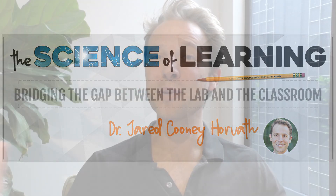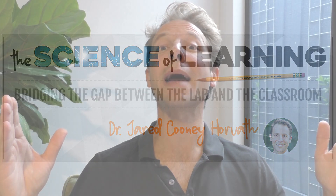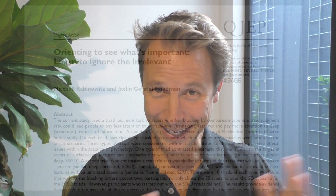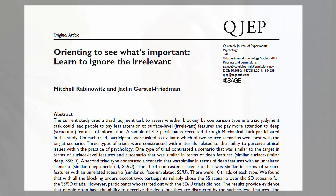Hello everybody and welcome to this week's From the Laboratory to the Classroom, where I read the research so you don't have to. This week the article I've chosen is 'Orienting to See What's Important: Learn to Ignore the Irrelevant' by Rabinowitz and Gerstel Friedman.